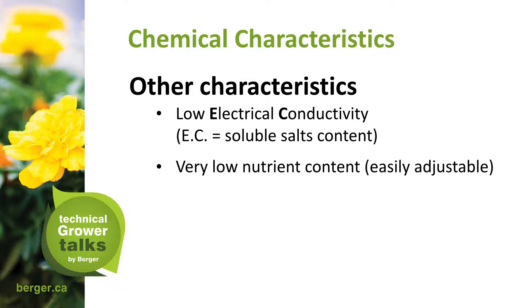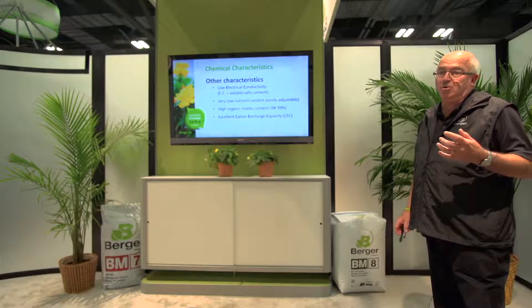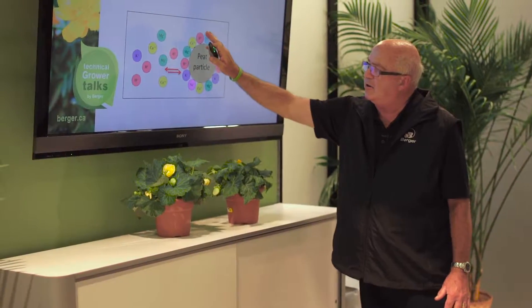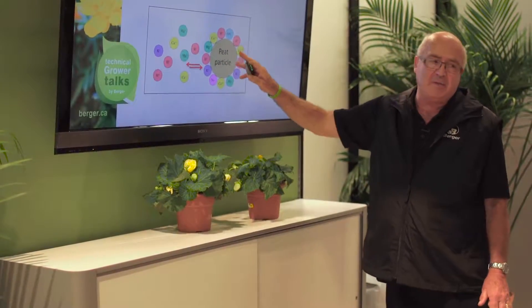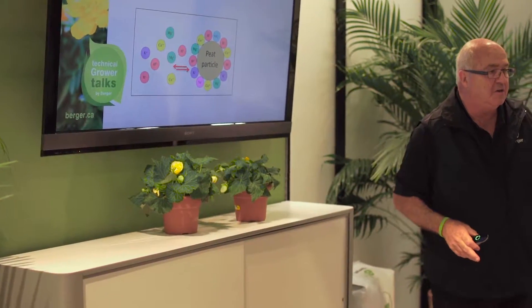Other chemical characteristics include low EC (soluble salt content), low nutrient content, and easily adjustable properties. Surface-active peat has a very good attraction to minerals and nutrients — it has high CEC, high organic matter, and excellent cation exchange capacity, giving it the ability to hold nutrients as a reserve in between watering and irrigation. There's a lot of negative and cation or anion exchange going on between these sites as a reserve until the next watering.